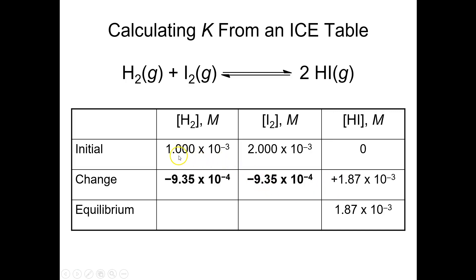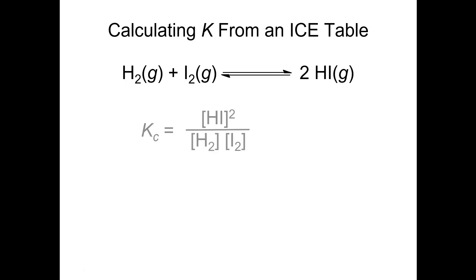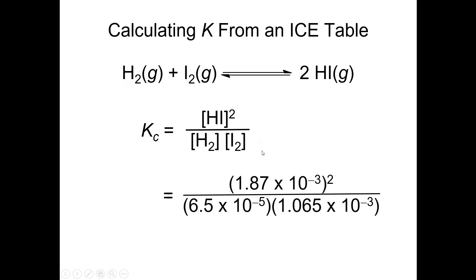The reactant concentrations carry negative signs since they are decreasing. 9.35×10⁻⁴ is one half of 1.87×10⁻³, because the reactants have a coefficient of 1 and the product has a coefficient of 2. Subtracting the change from the initial gives the final equilibrium concentrations. We write the equilibrium constant expression — products raised to their coefficients over reactants raised to theirs — plug in the numbers, and get an equilibrium constant Kc = 51.